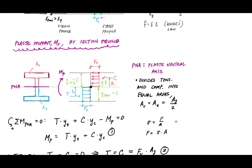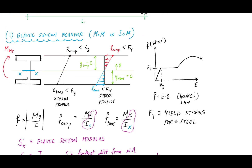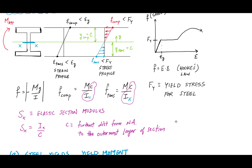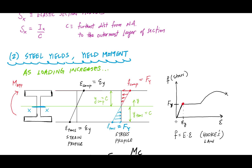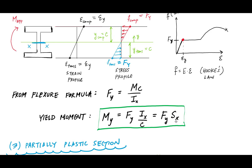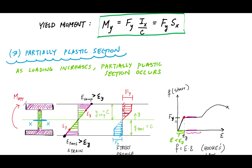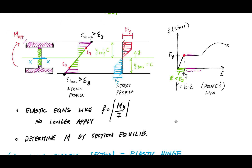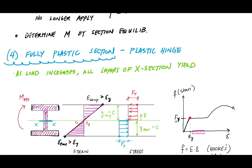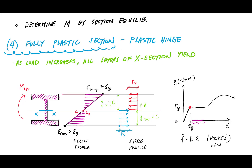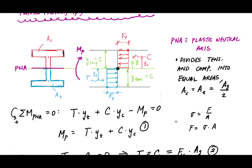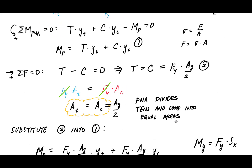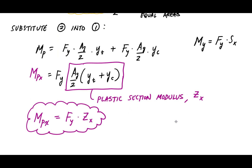So let's recap what we did. We talked about beam behavior: when the load is small and nothing is yielding, everything is linear elastic — just apply strength of materials. Then we reach a yielding point where the top and bottom start to yield, and we calculate the yield moment using the bending formula. Beyond yield, we want to use more of the material: as more of the cross section yields, the elastic equations no longer apply, and we use section equilibrium. In steel design, what's important is whether we can design a beam to reach a fully plastic cross section, maximizing all available material. We sum moments and forces to prove the location of the plastic neutral axis and calculate the plastic moment, introducing the plastic section modulus.